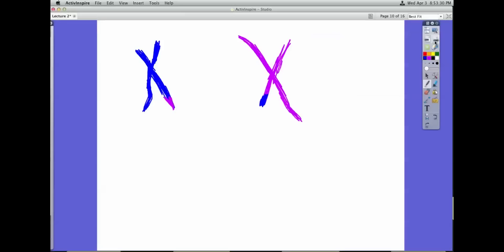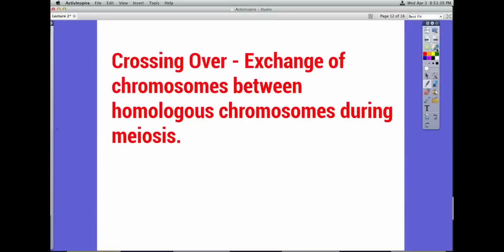Watch it again real closely and then they start to move apart from each other and it's called crossing over. So the blue crosses over onto the purple and the purple crosses over onto the blue. And this is how you get so many different kinds of species in the world and so many different variations within species because you have an exchange of chromosomes between homologous chromosomes during meiosis.